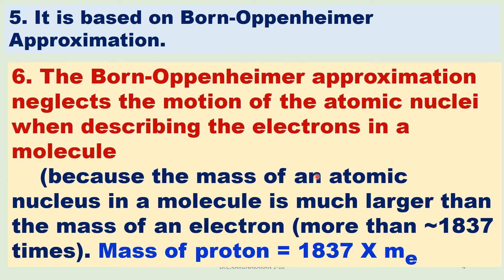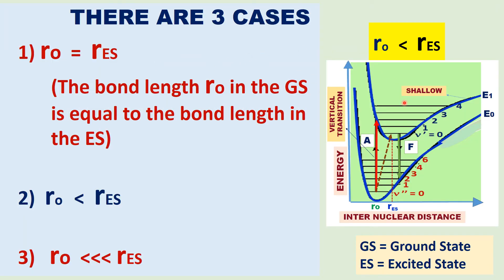During the electronic transition, there is no change in the atomic positions of the vibrating molecule. There are three cases depending on the equilibrium bond length. Case 1: R0 equals R_ES — the bond length in the ground state is equal to the bond length in the excited state. We will see that in Part 2 with quantum mechanical aspects. Case 2: the equilibrium bond length in the excited state is greater than the bond length in the ground state.